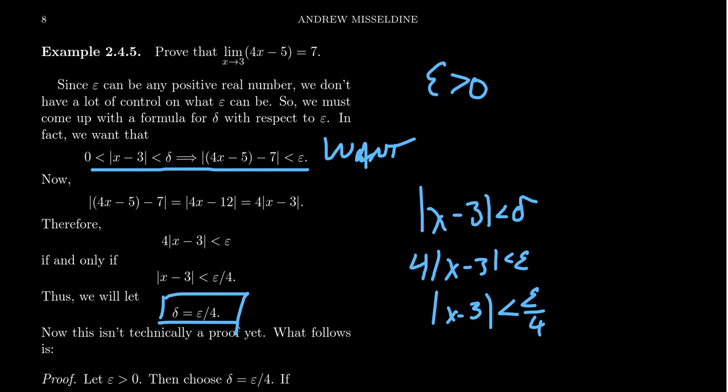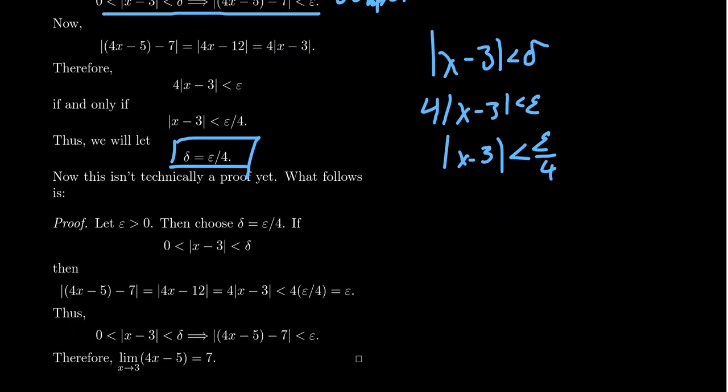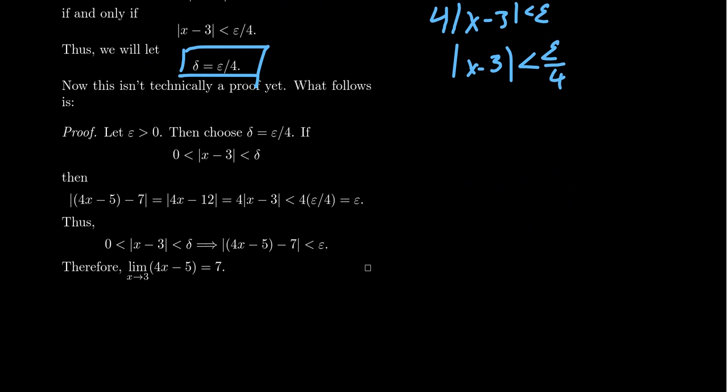If we set delta to be epsilon over 4, then it turns out that's going to work for us. The significance of 4 is, after all, this function, y equals 4x minus 5, this is a linear function. 4 is the slope. And so in this situation, we can use the slope to determine the ratio between epsilon and delta. For linear functions, epsilon and delta will be directly proportional to each other with respect to the slope. Now, what we saw here is technically not a proof. This is sort of like the thinking that one could use to derive the proof.